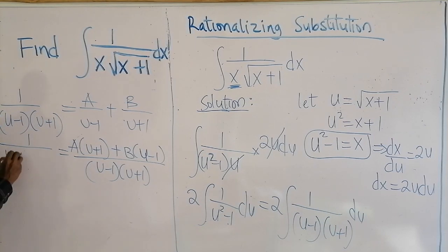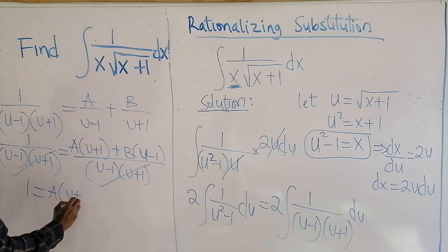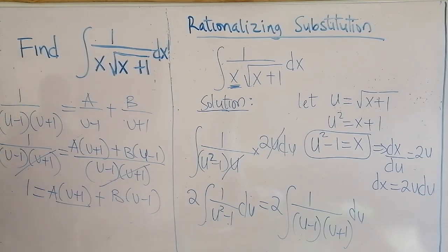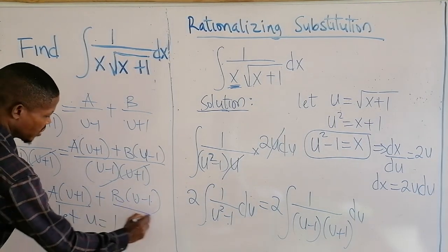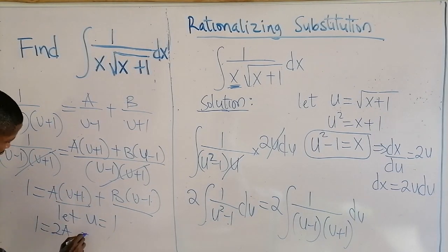The denominators on both sides cancel, so the numerators are equal. We use substitution to find the constants. Let u equal 1: the B term cancels, and we get 1 equal to A times 2, so A equals 1/2.